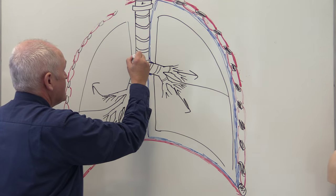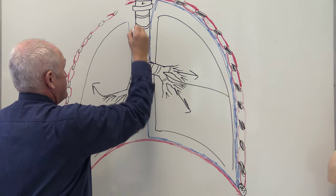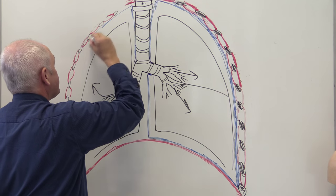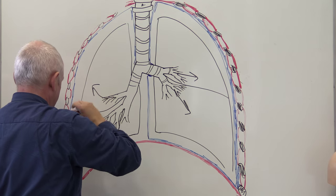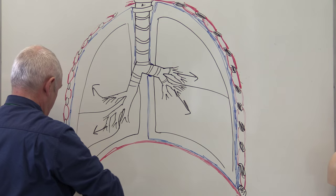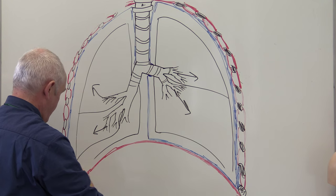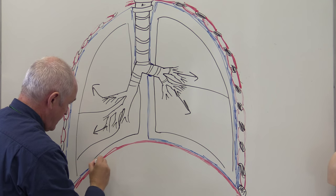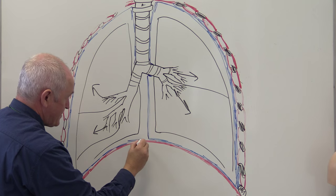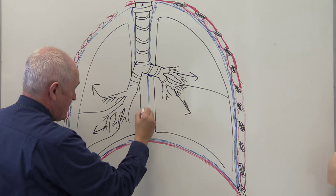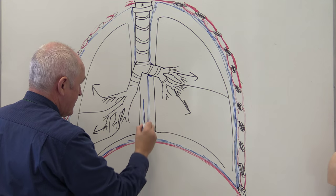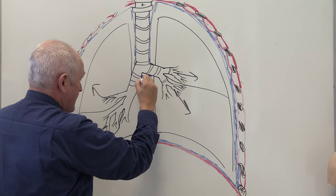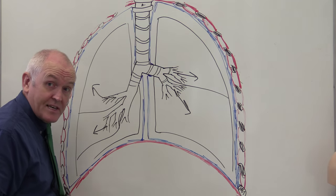There's one parietal pleural membrane on each lung, because they're both in their own pleural membrane. The parietal pleural membrane covers the superior surface of the diaphragm on each side, with each lung having its own.